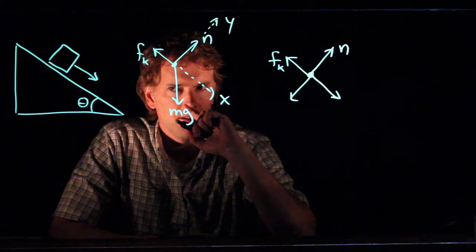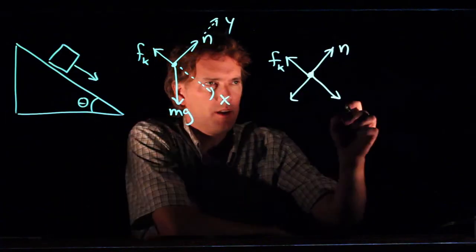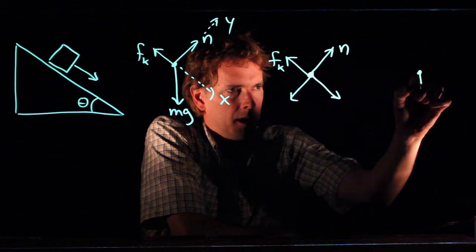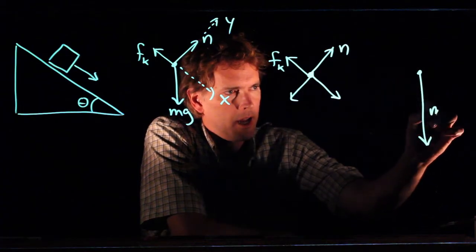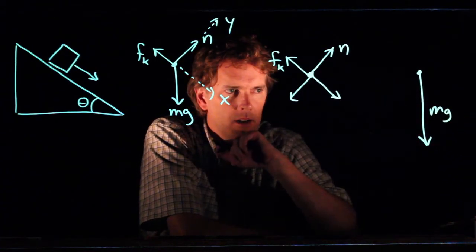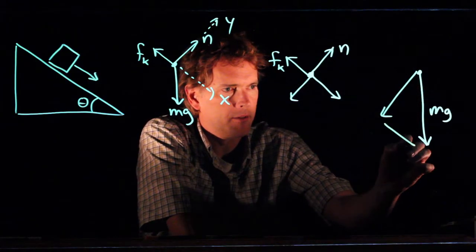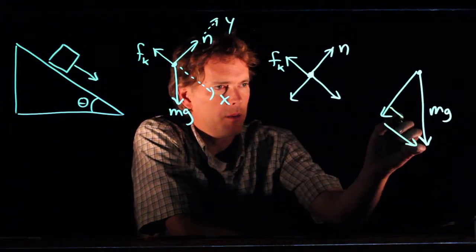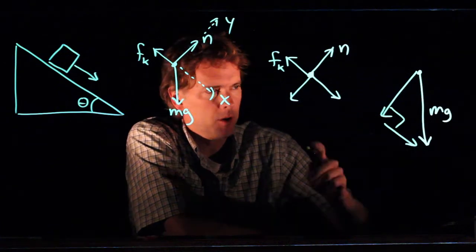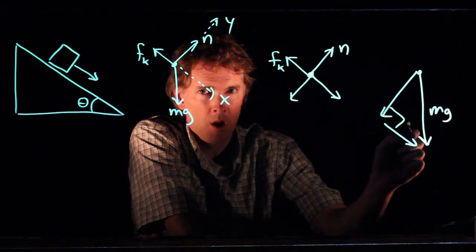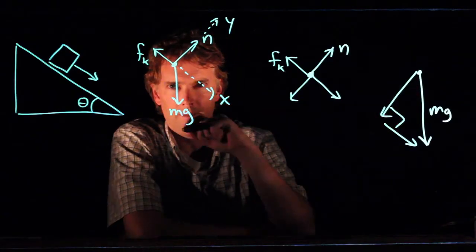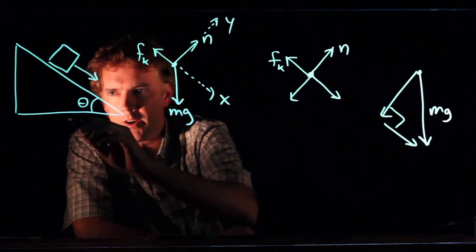Well, let's think about it in the following way. I know that if I draw mg as a vector straight down, I can draw that as two vectors, one along the negative y, one along the positive x. And so the question is, is this angle theta or is this angle theta? And let's see if we can figure it out.